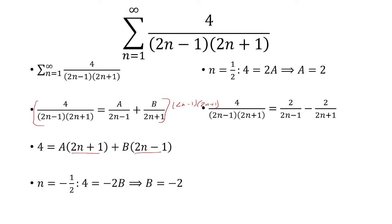So now we have A and B, so we can rewrite this fraction as 2 over 2n minus 1 minus 2 over 2n plus 1. And so I'm going to find the sum of these two fractions.